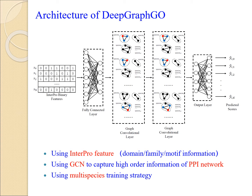Finally, the model predicts scores of GO terms for each protein by an output layer. The loss function used was binary cross-entropy. Although the PPI network is not connected across different species, the GCN layer only aggregates the representation of each node from its neighboring nodes. This allows DeepGraphGO to train a single model on proteins from all species and use much more training samples than other network-based methods.